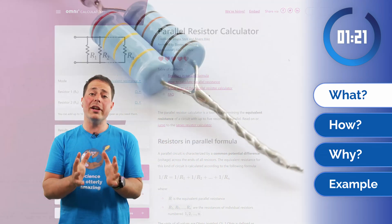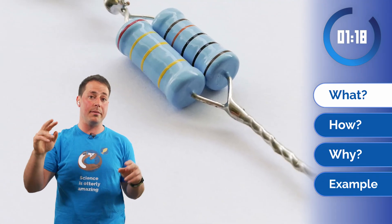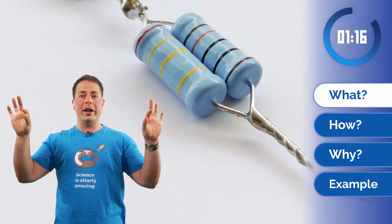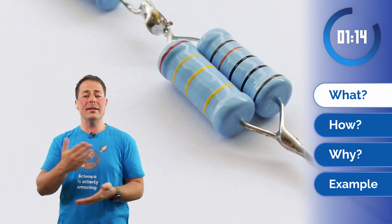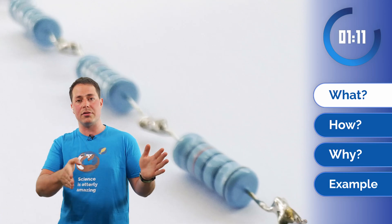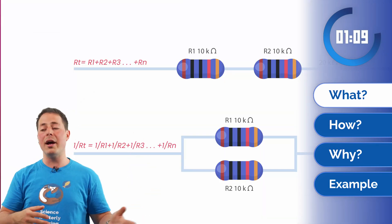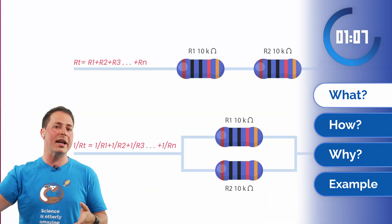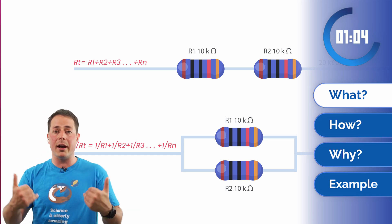In particular, it deals with the parallel configuration — when we have resistors in parallel, all connected to the same two points in the circuit. This is in contrast with the series configuration, where you have one resistor after the other, but that uses different math and we have a different calculator for it. Check out the description if you are interested in that calculator.